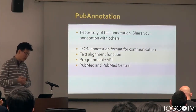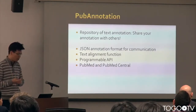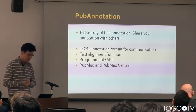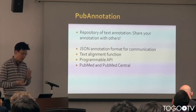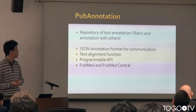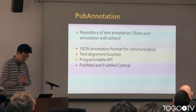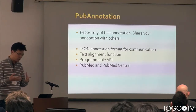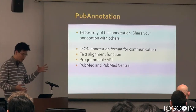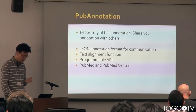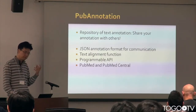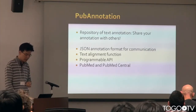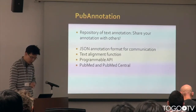And there's PubAnnotation. PubAnnotation is basically a repository of text annotation, and the main idea behind PubAnnotation is to share annotations with everyone. JSON format is used for communication purposes in PubAnnotation. Since PubAnnotation stores data from around the world, this JSON format is the one that PubAnnotation uses for uploading or downloading data, so people can easily upload their data through the API. PubAnnotation is also a very nice text alignment tool, and it supports PubMed and PubMed Central documents.